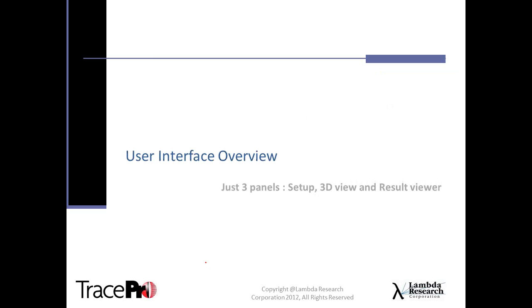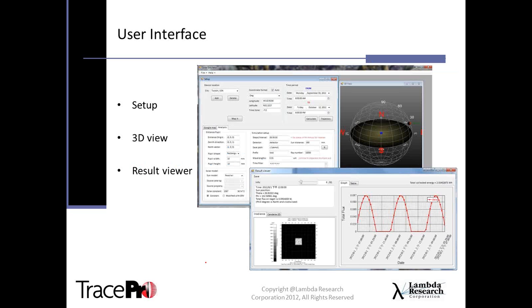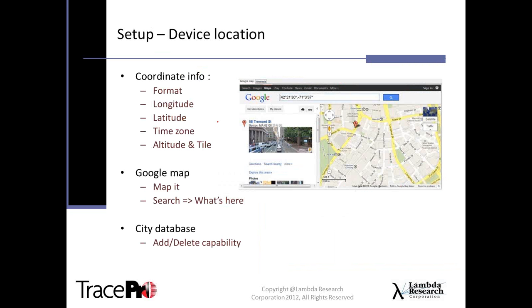Let's look at the user interface. There are just three panels: setup, 3D view, and result viewer. The setup portion is where you specify where the solar collection system is located — longitude, latitude, time zone, altitude, and tilt. You can use Google Maps to verify or search for coordinates and feed them back into the program. There's also a city database of 12 to 14 cities that you can add to and delete from, making it easy to look at different cities using the solar simulation.